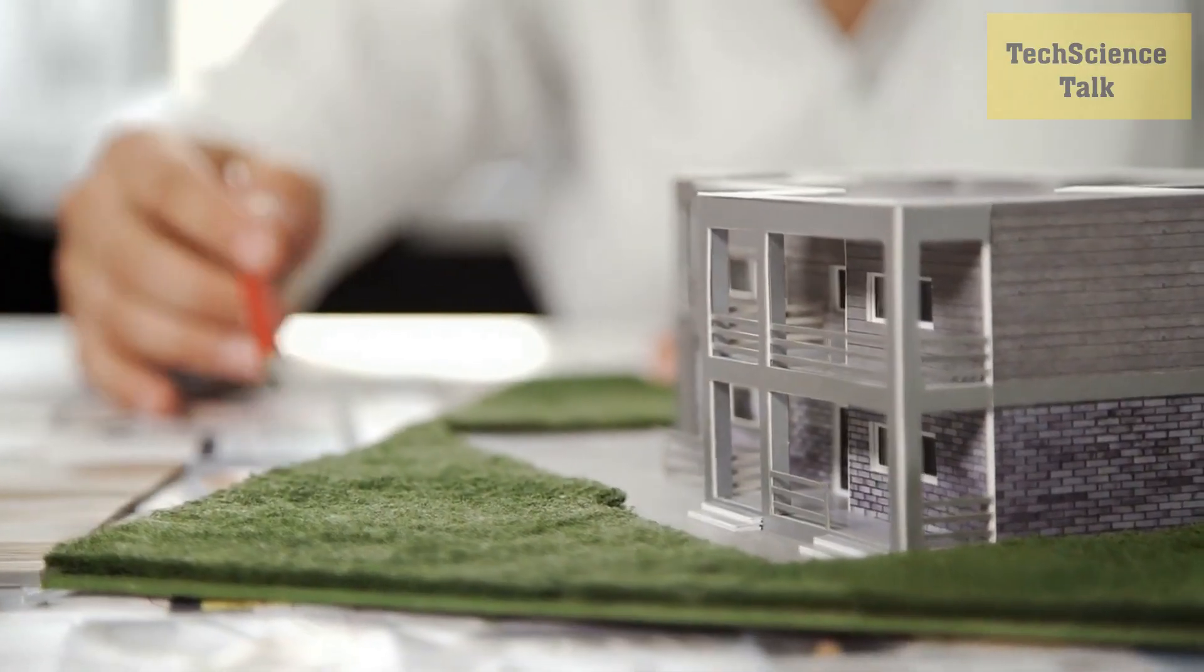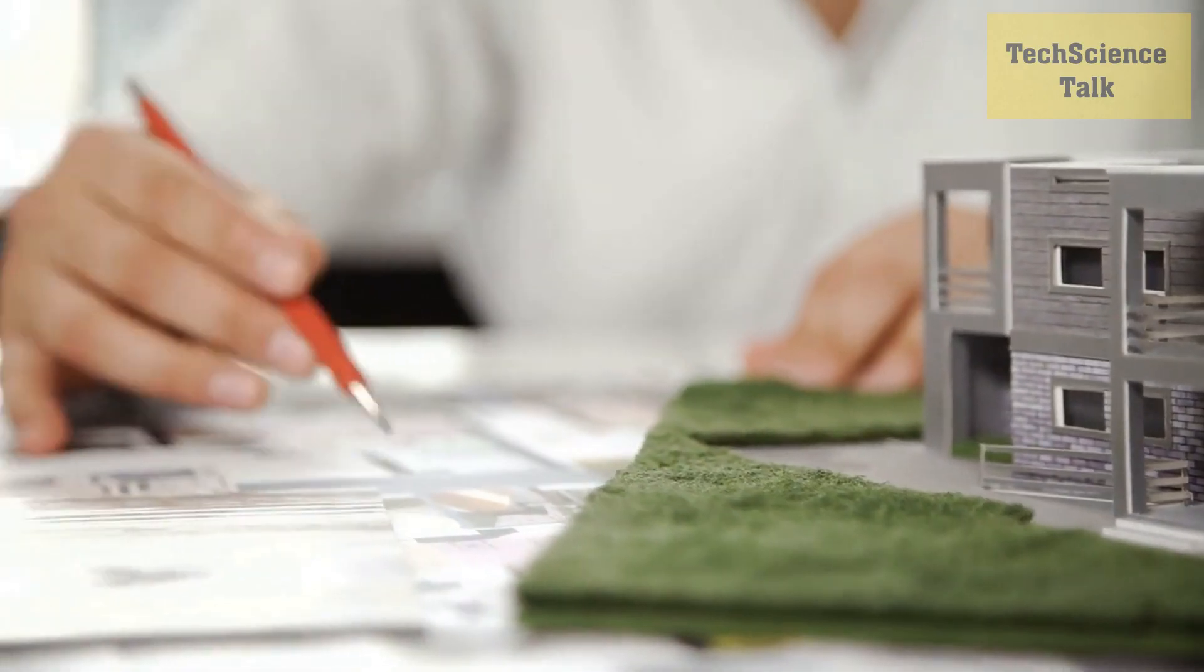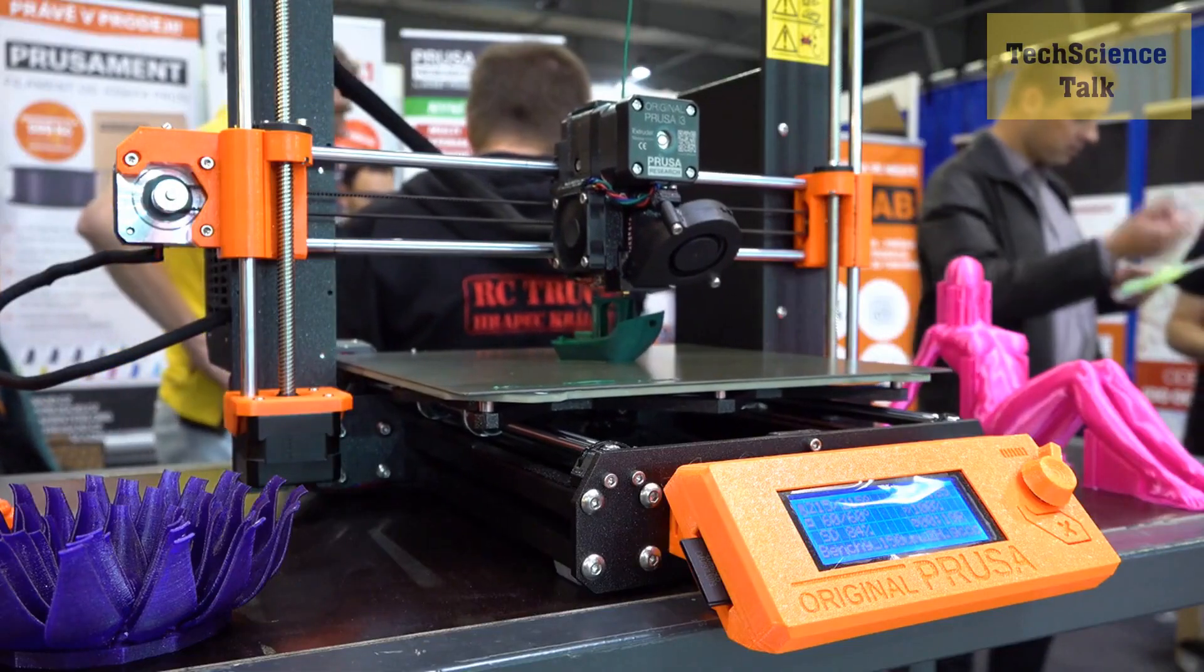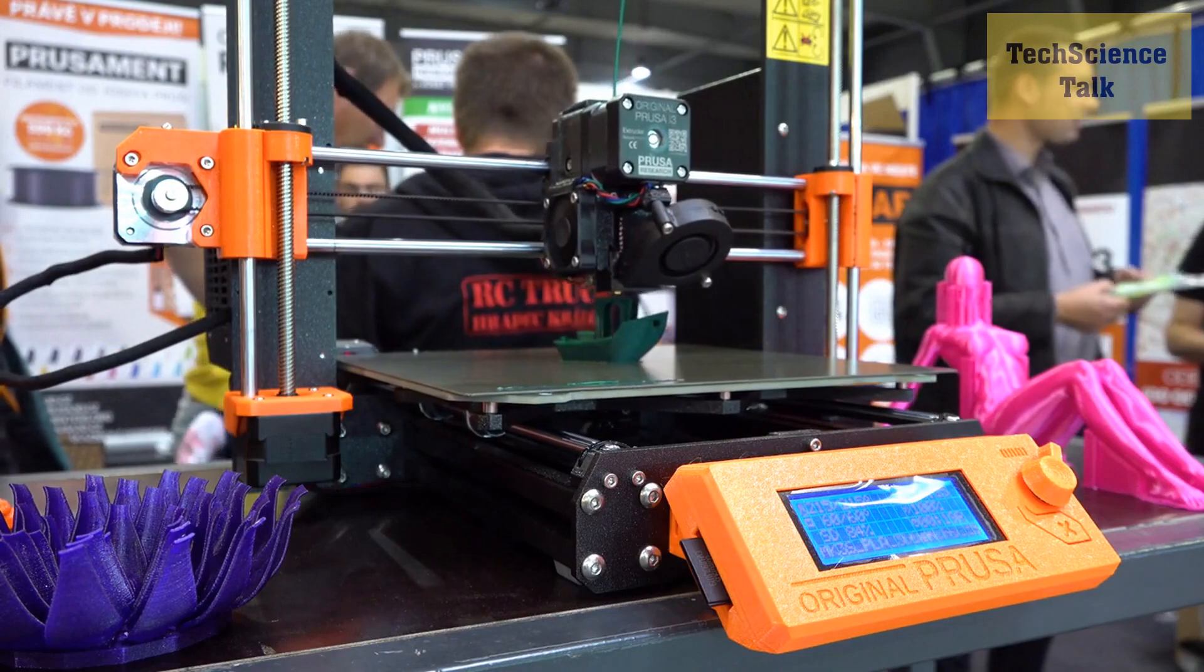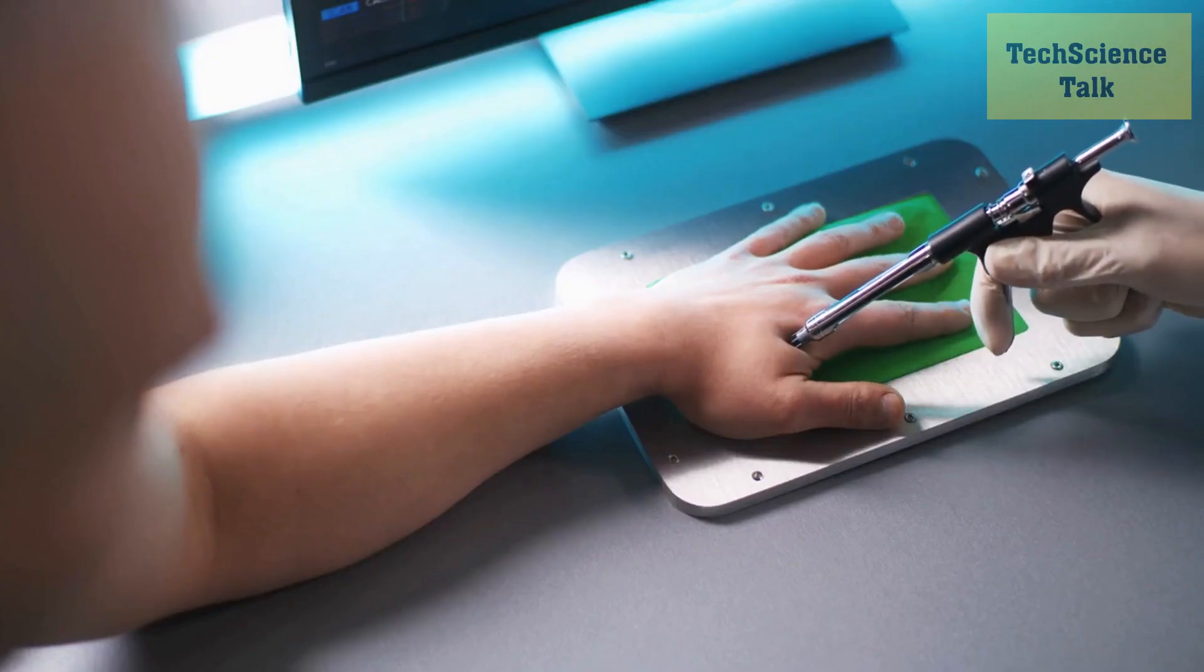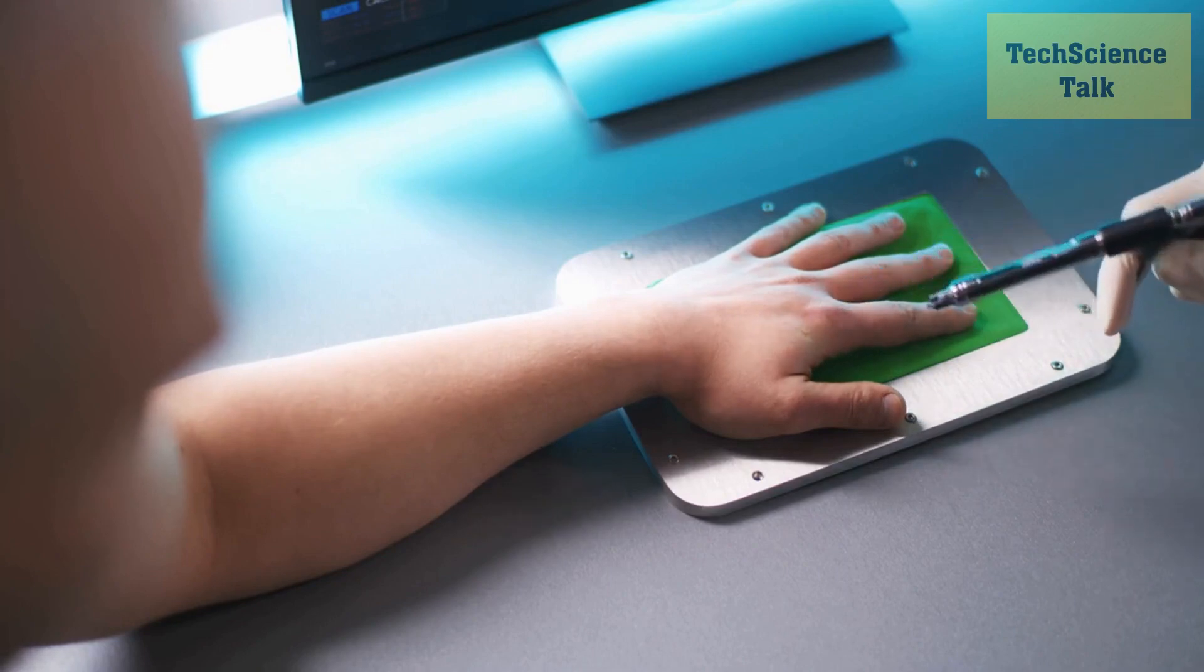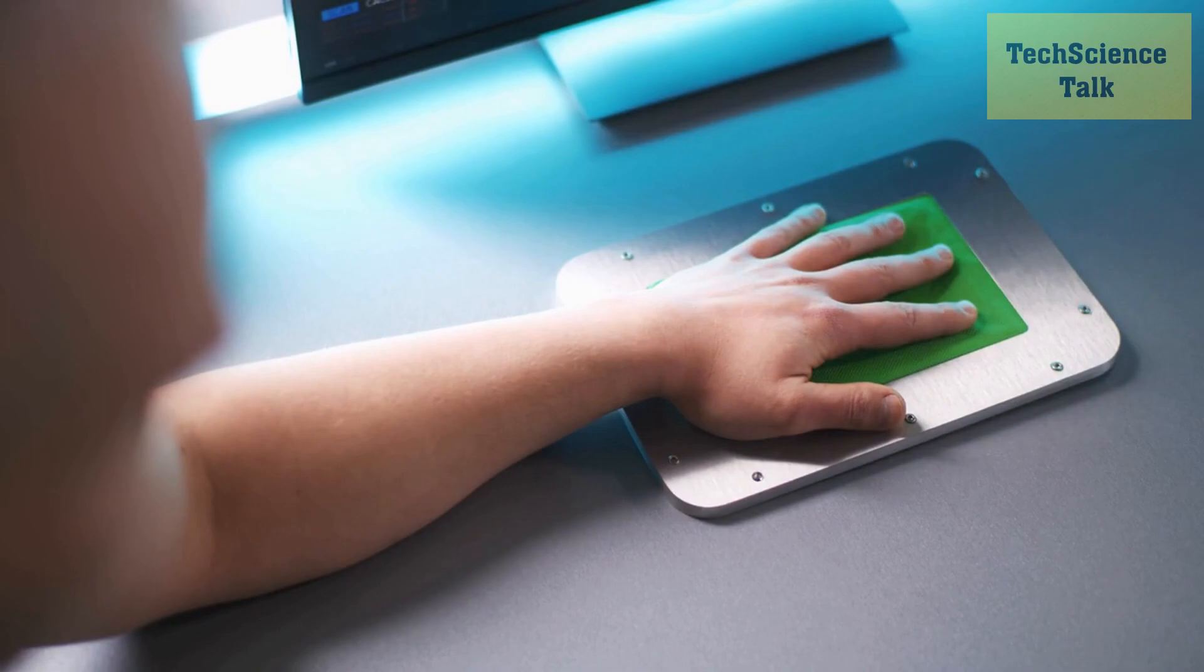And in architecture, 3D printing is used to create small models and even full-size structures. One of the most promising areas of 3D printing in healthcare is the creation of personalized medical devices. 3D printing allows doctors to create custom implants and prosthetics that perfectly fit a patient's body, reducing the risk of complications and improving outcomes.